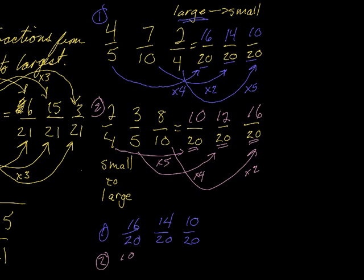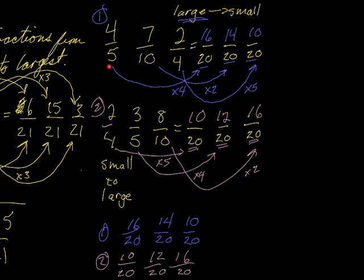Since this is small to large, the order is: 10/20, then 12/20, then 16/20. You have to remember — you must make sure that all the denominators are a common denominator. Whenever you're faced with three or more fractions with different denominators, you have to get them all the same. Make sure you follow this pattern. Good luck!